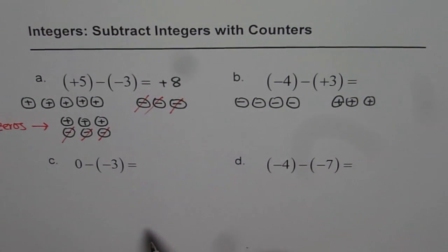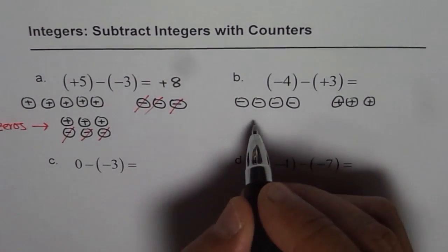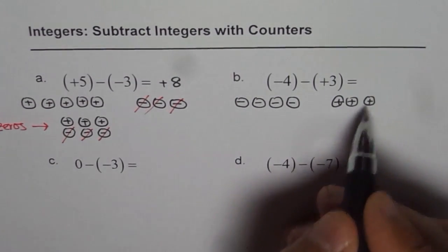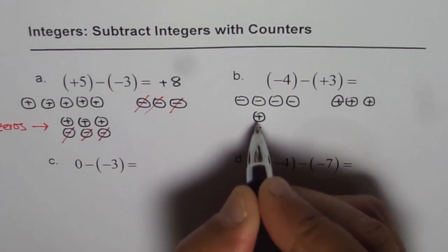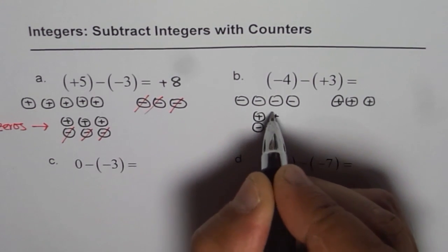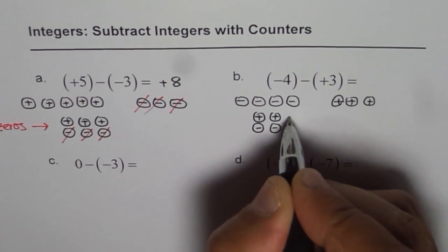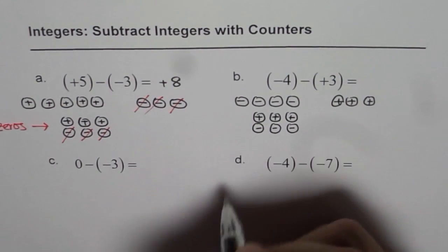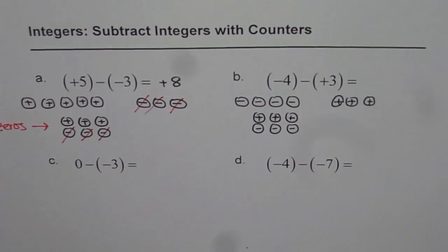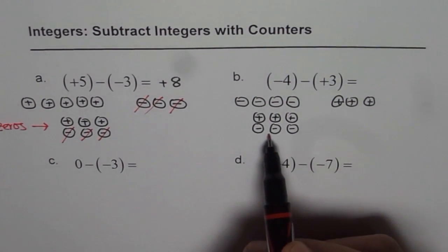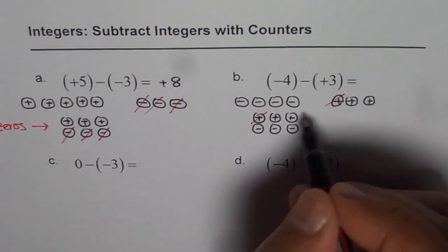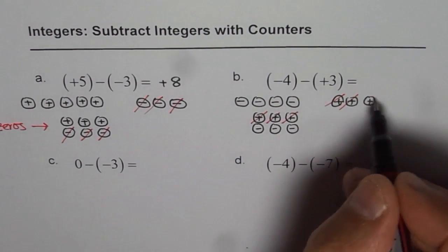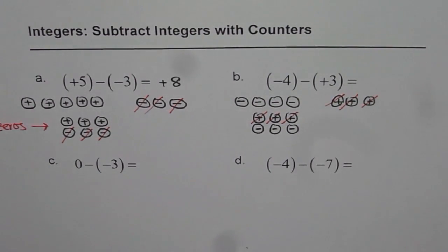But as you know we do not have positive counters on the left side. What should we do? Add zeros. How many? 3 zeros. Zeros are combination of plus and minus, so these are the counters which I am adding — combination of plus and minus. Once you add zeros, you have both kinds — negative and positive — on the left. So you can take away positive counters. Let us take away one by one — take away the positive 3.